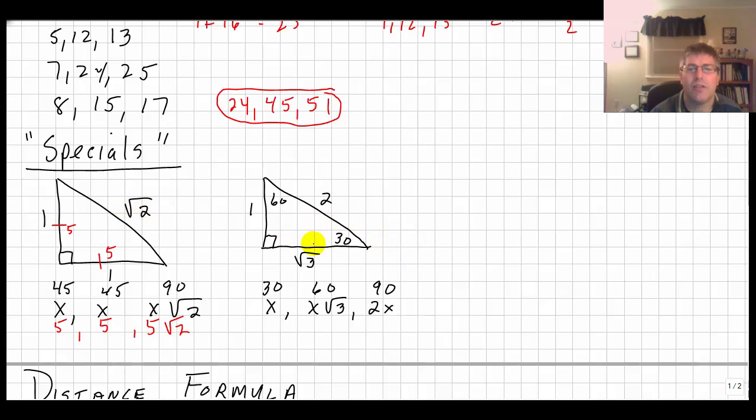And the other family is the 30, 60, 90 family. Where the sides of the triangle are 1, square root of 3, and 2. Now, keep in mind the side opposite the 90 degree angle, the hypotenuse is always the longest side. Because the right angle is the largest angle in a right triangle. And the smaller side is always opposite the smaller angle.